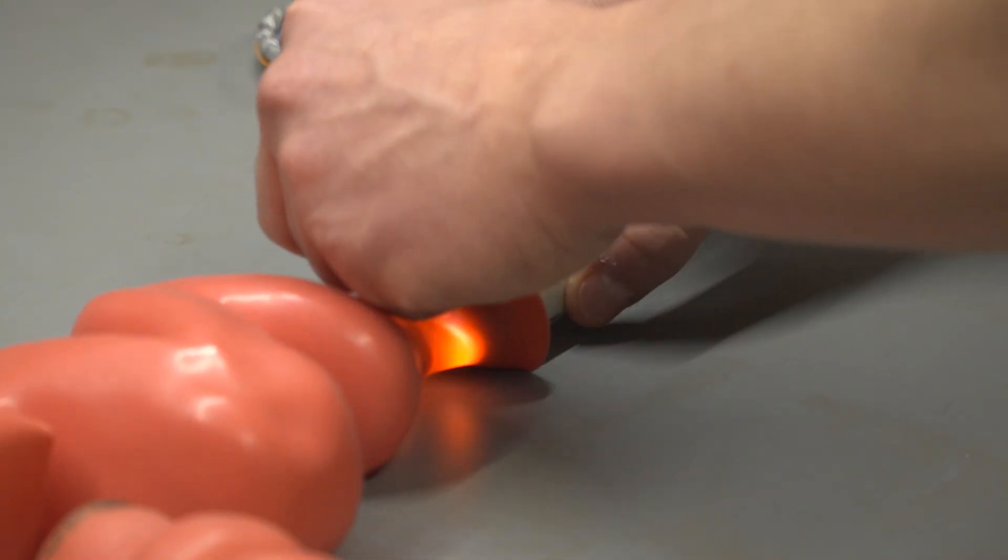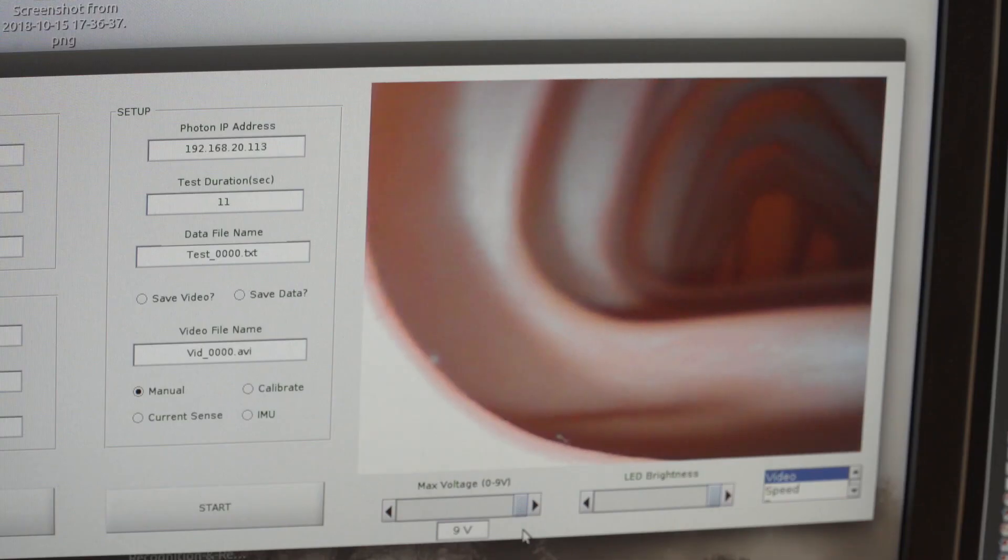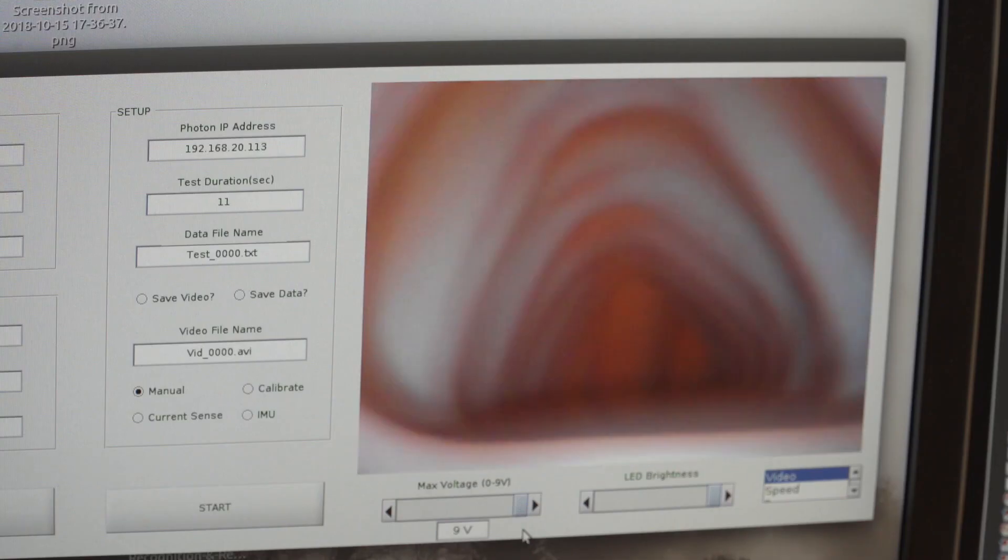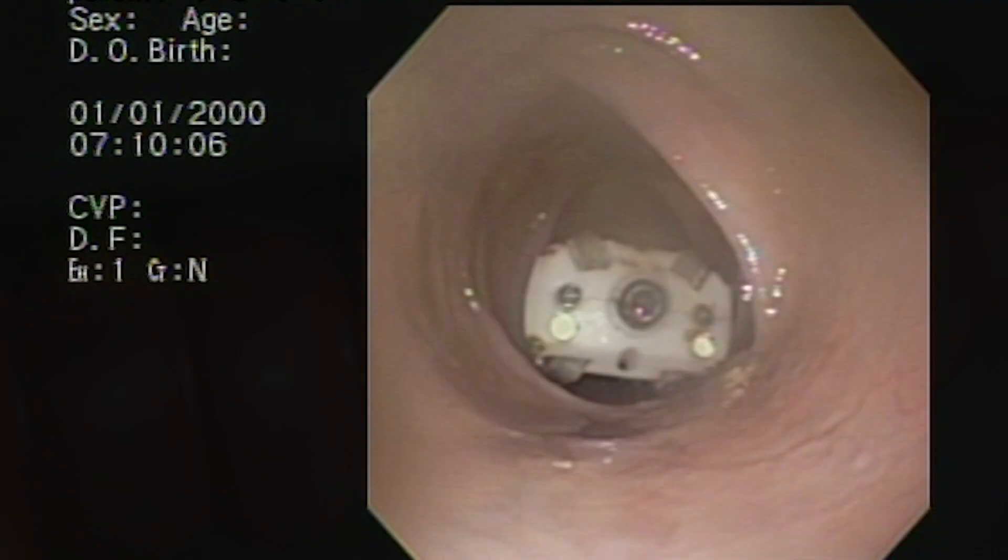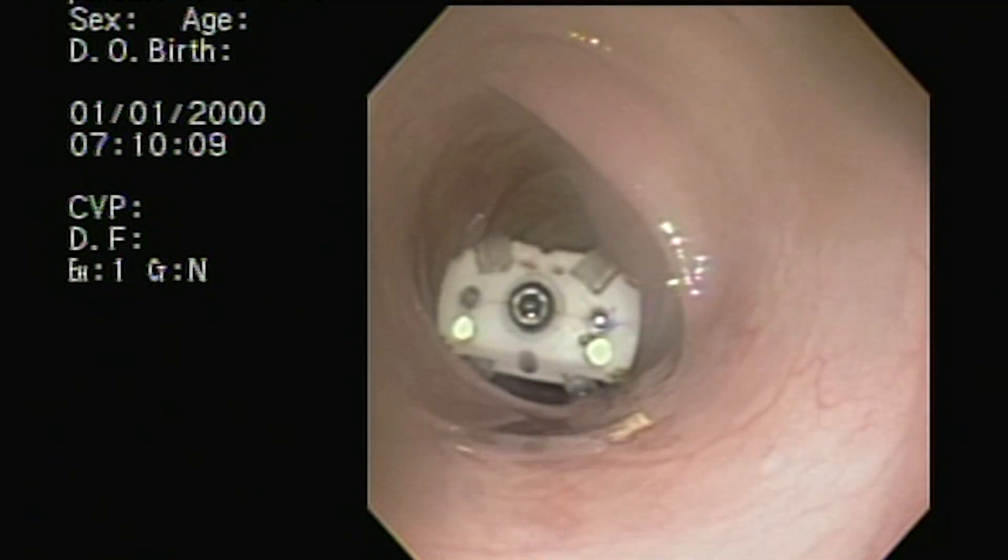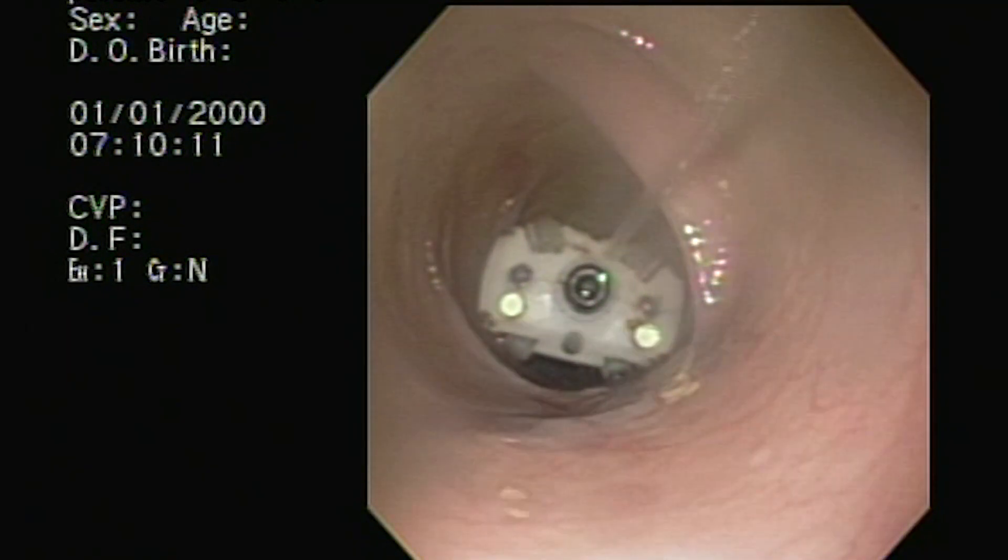Colon cancers are on the rise continuously. It's the third most fatal and diagnosed cancer in the United States. However, if they're caught early at one of the early stages of the cancers, they're 95% treatable. So if we can get people screened early, we definitely can reduce the fatality rate of colorectal cancers significantly.